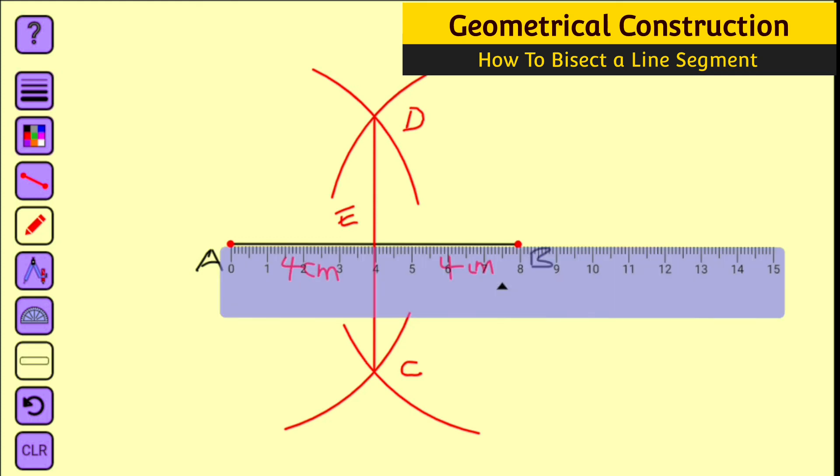You can see that my ruler measures from this point to this point as eight centimeters, and halfway you can see that on the ruler four centimeters. And this is exactly how to bisect a line segment into two equal parts. Thank you for watching. Do have a nice day.